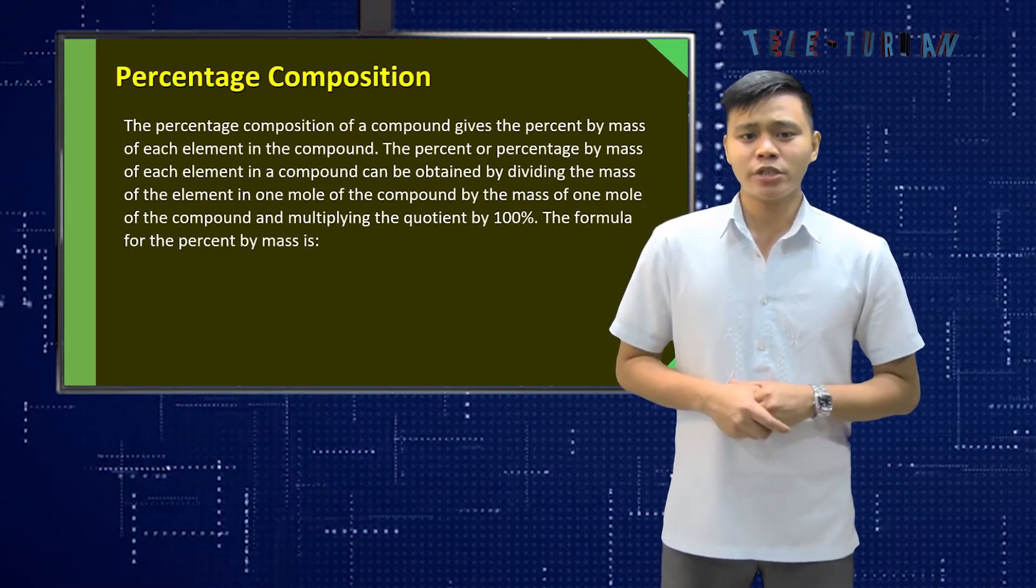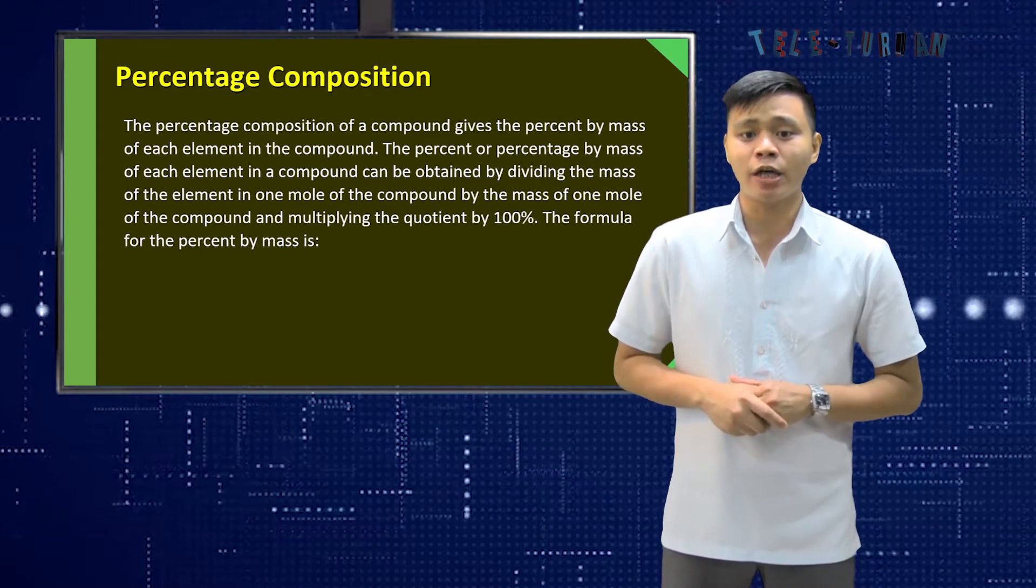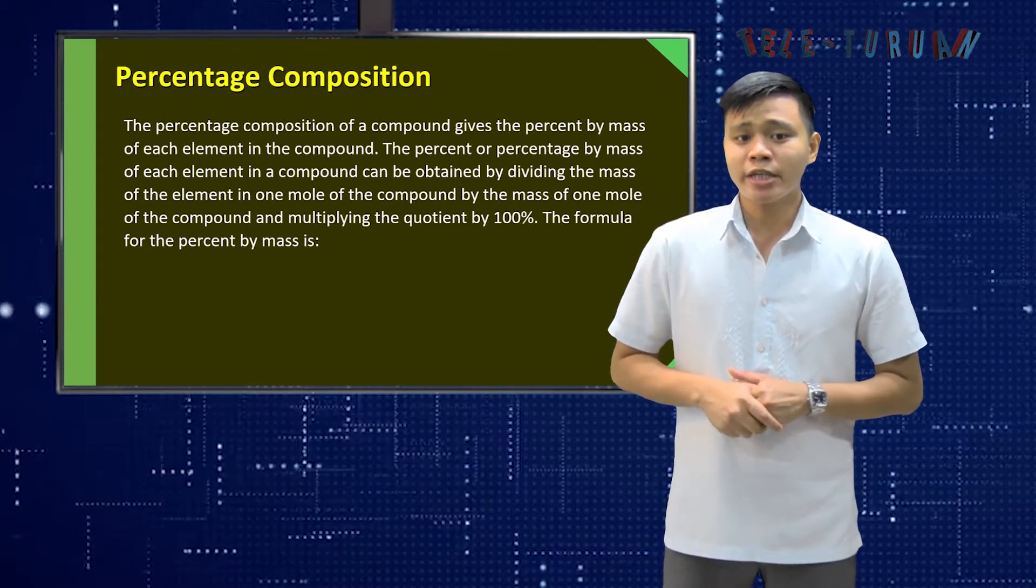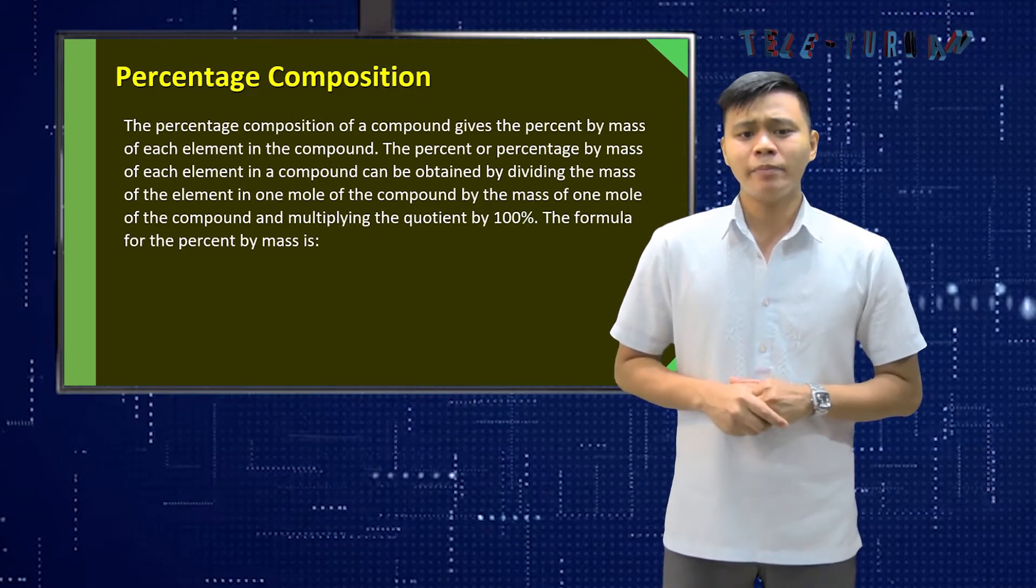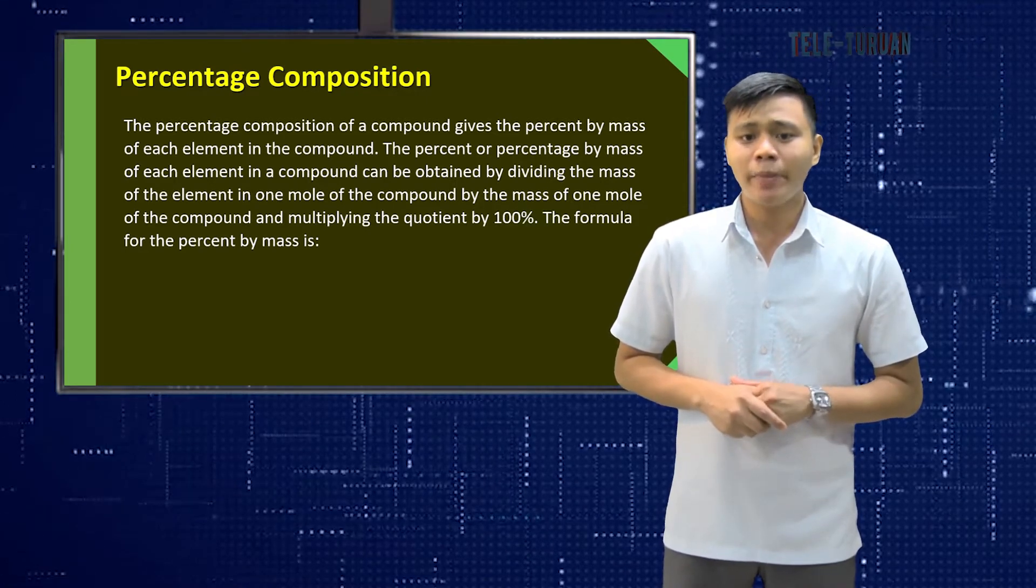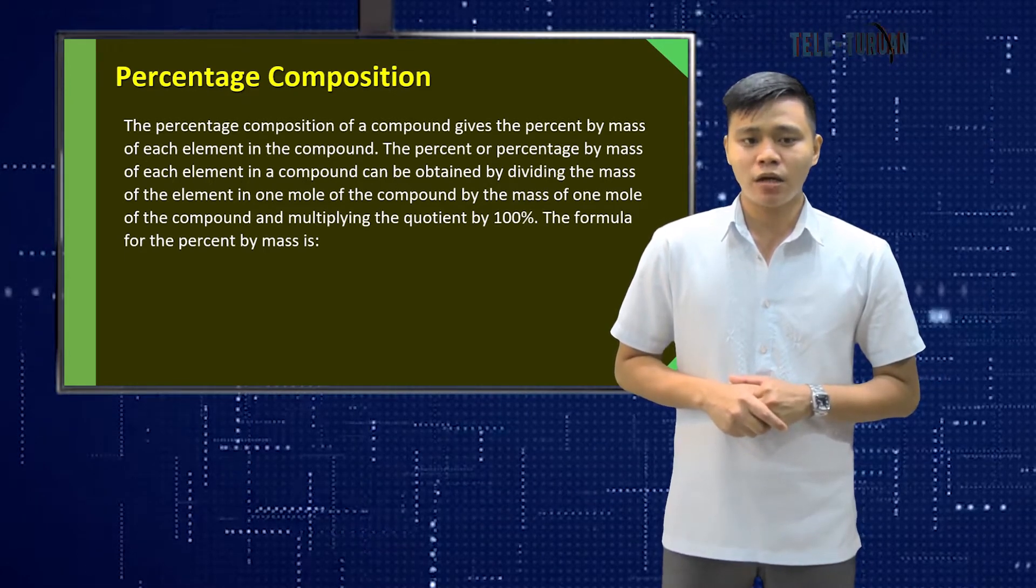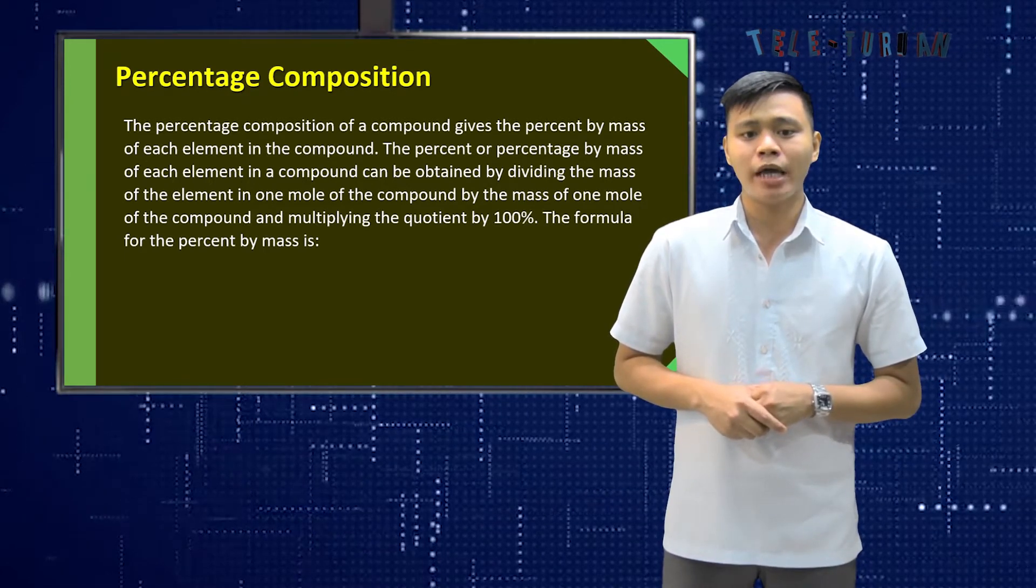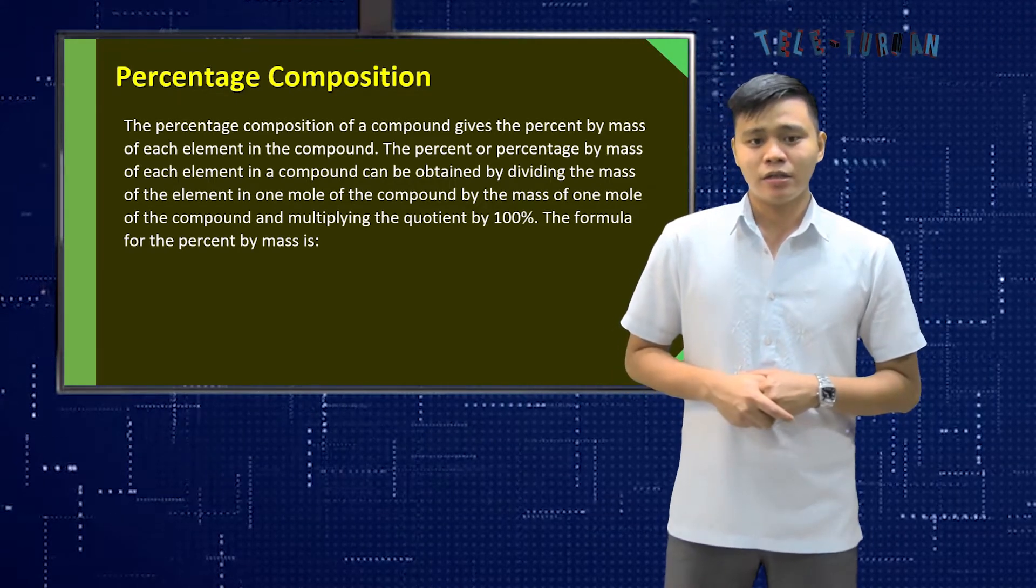The percentage composition of a compound gives the percent by mass of each element in the compound. The percent or percentage by mass of each element in the compound can be obtained by dividing the mass of the element in one mole of the compound by the mass of one mole of the compound and multiplying the quotient by 100%. Therefore,